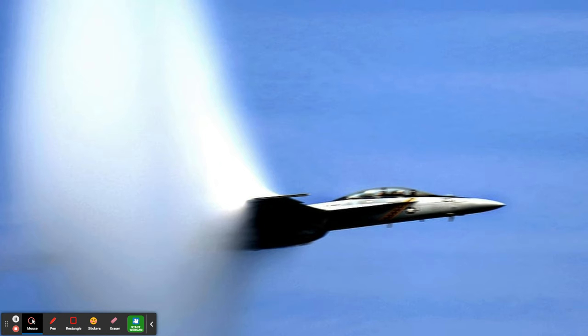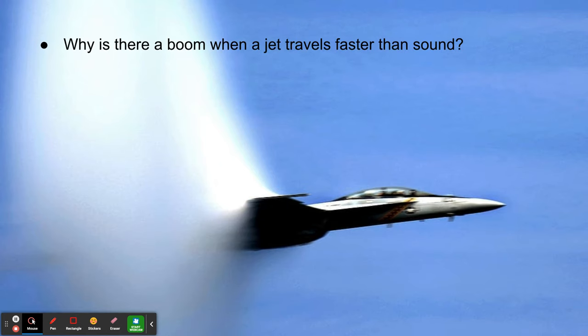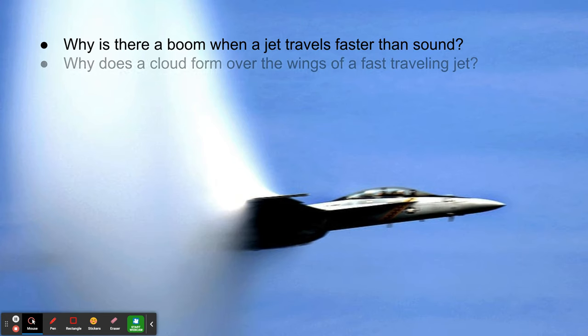Here we have a jet breaking the sound barrier. One phenomenon is that there's a sonic boom — why is there a sonic boom when a jet travels faster than sound? Or why does this cloud form over the wings when a jet travels so fast, particularly over the speed of sound?